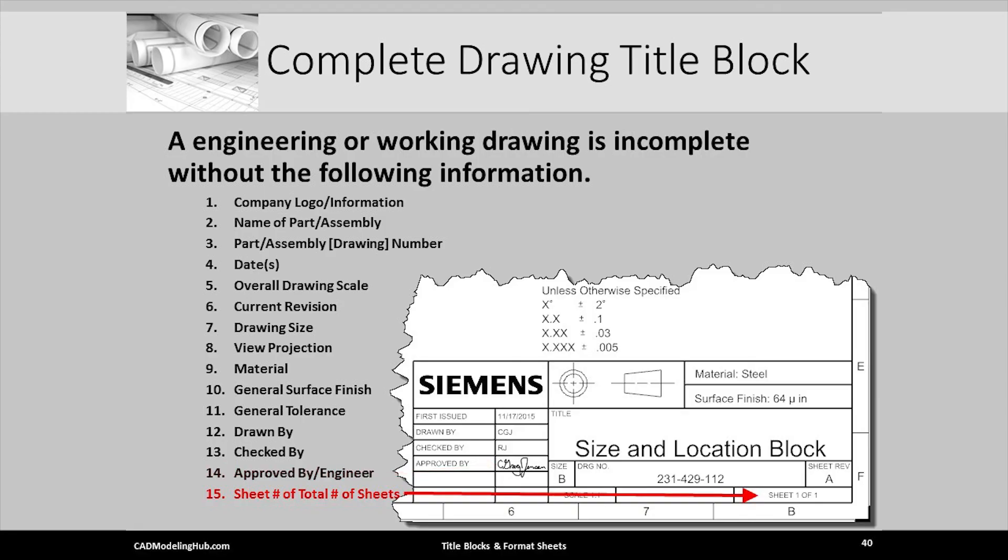In this cell of the title block, we indicate which page of the total number of pages make up a complete set. For this simple part, only one sheet of one is needed.